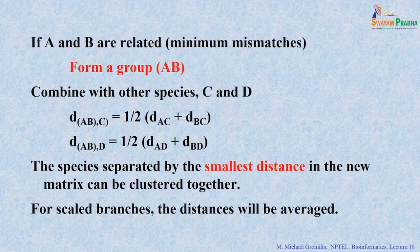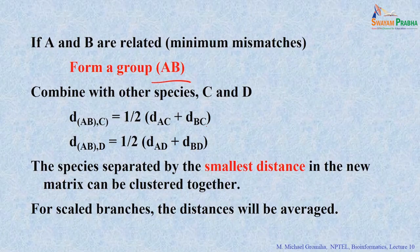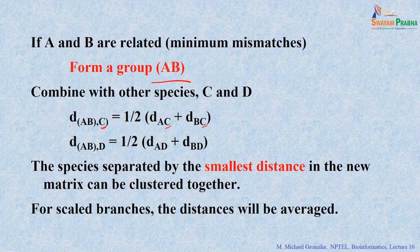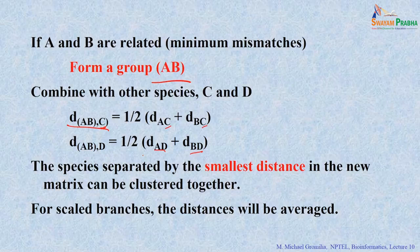If A and B are the closest, they have the most similarities. You combine this group and then combine with C and D. They use this equation: to combine AB with C, take (AC + BC) / 2 to get the distance from the merged group AB to C. Likewise, take (AD + BD) / 2 to get AB to D. Then find which two remaining groups are closest, and construct the tree from the smallest distances.